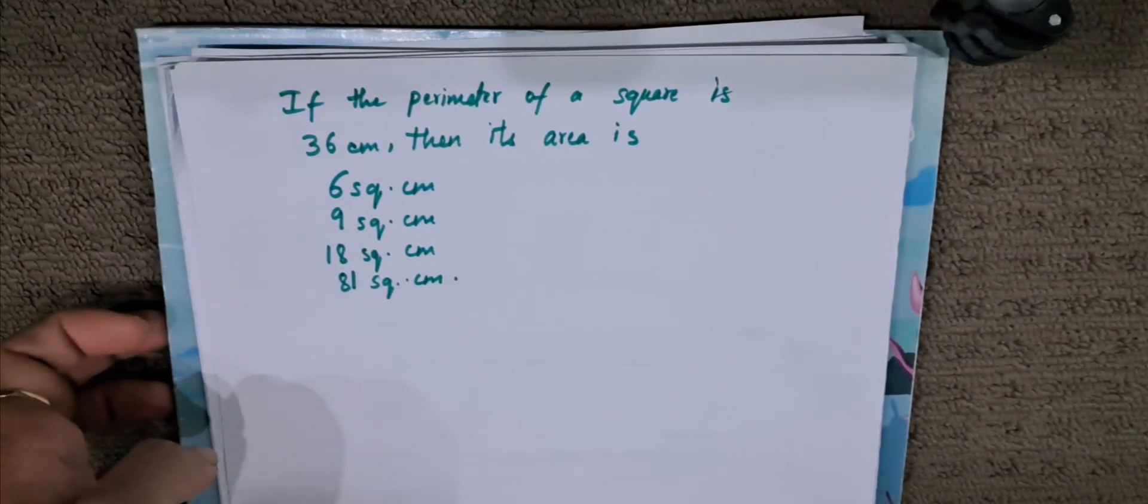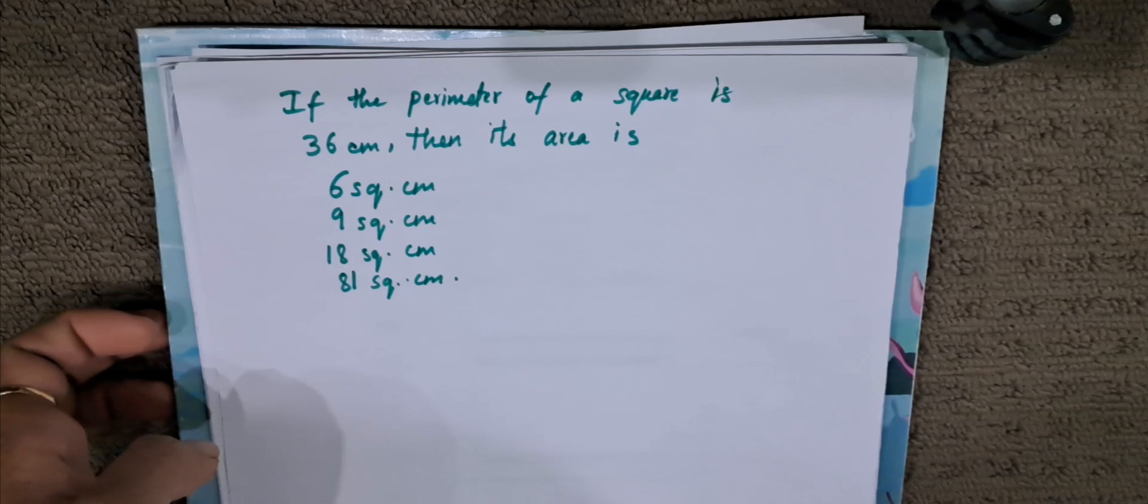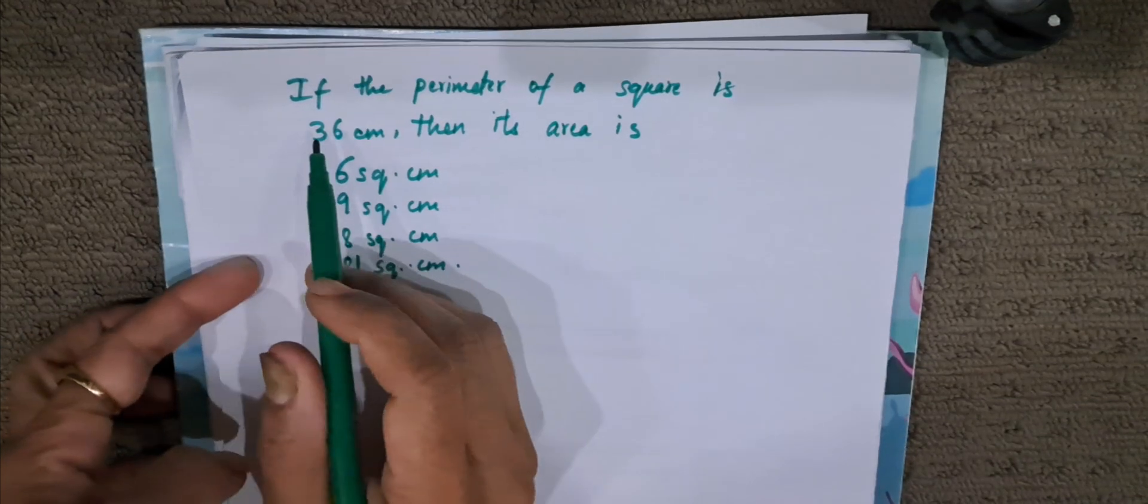Hello everyone, welcome to AG Mathematics. This is Rekha here. Today, we will be finding the area of a square whose perimeter is given. Let us see the question.